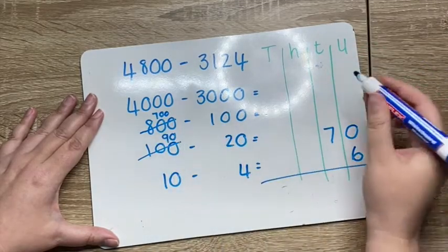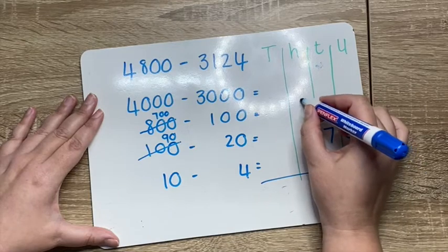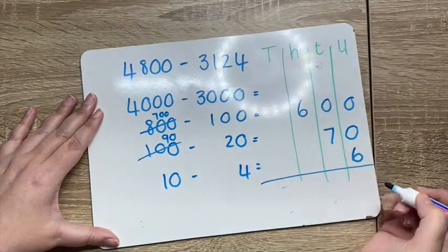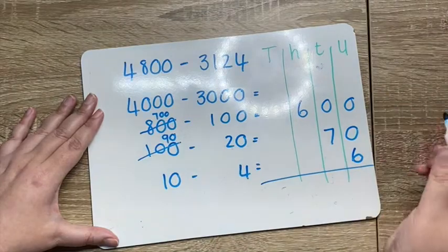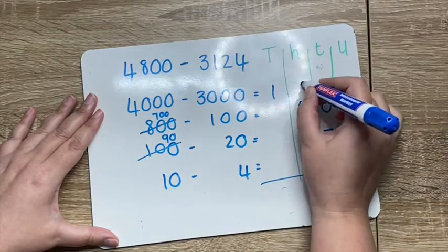700 minus 100 is 600. Can you see that the 6 is under the hundreds? And 4,000 minus 3,000 is 1,000.